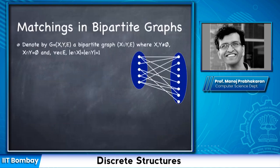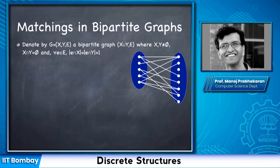Matchings are especially interesting in bipartite graphs. I'll use a slightly different notation for bipartite graphs: there are two subsets of vertices — calling those sets X and Y — and all edges go across the two parts. So each edge has exactly one node in X and one node in Y.